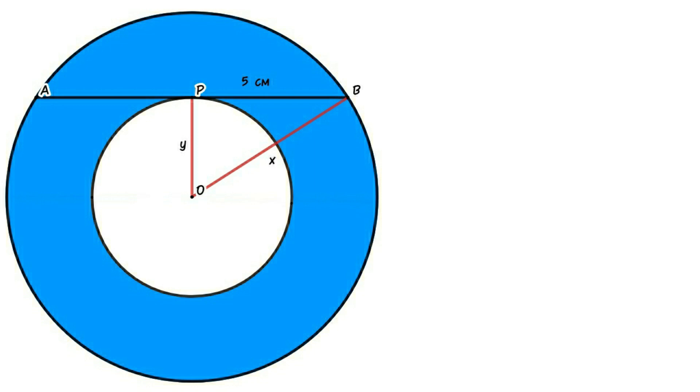Applying Pythagorean theorem in triangle POB, PB² equals OB² minus OP². 5² equals x² minus y², so x² minus y² equals 25.